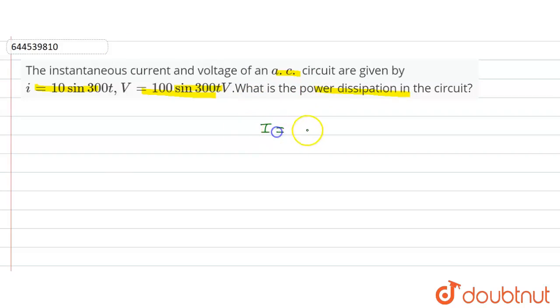Current i is given as 10 sin 300t. We know the general equation of current is i = i₀ sin ωt. When we compare both equations, we get i₀ = 10.